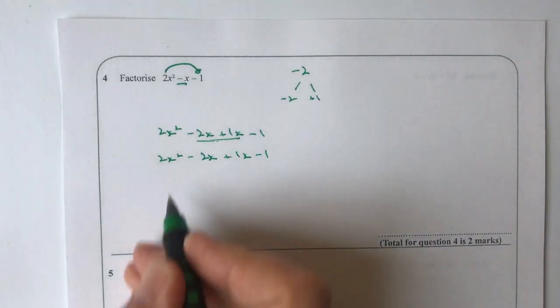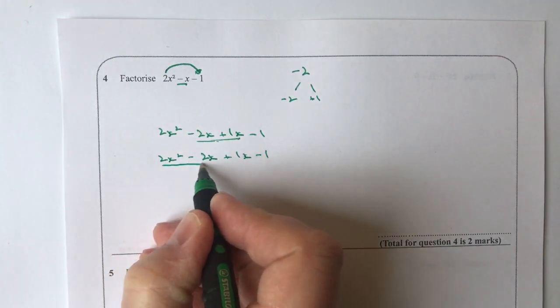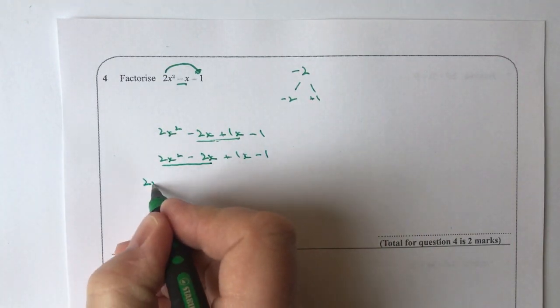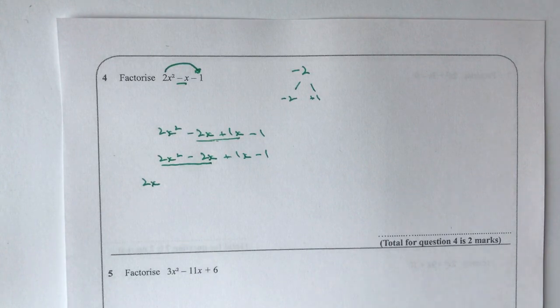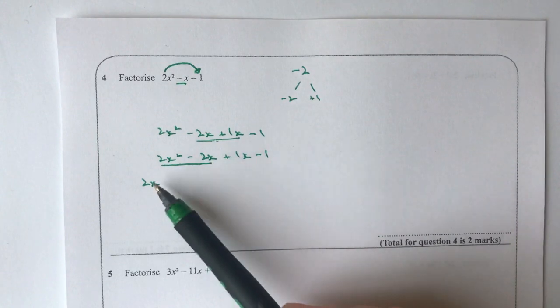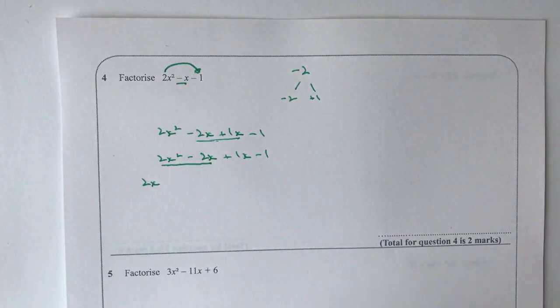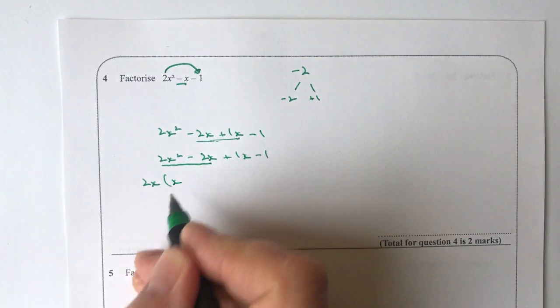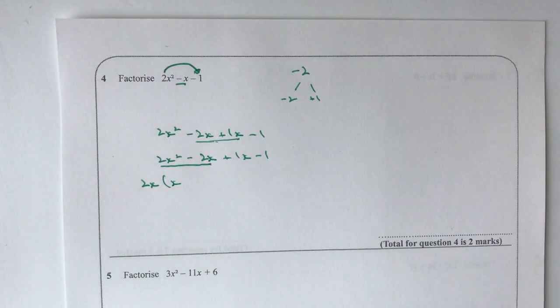What I'm going to do is look at the first two terms and I'm going to factorise those for 2x, because 2x is the highest common factor of 2x squared and 2x. So 2x will go into 2x squared and I can multiply that by x, and it will also go into minus 2x minus 1.